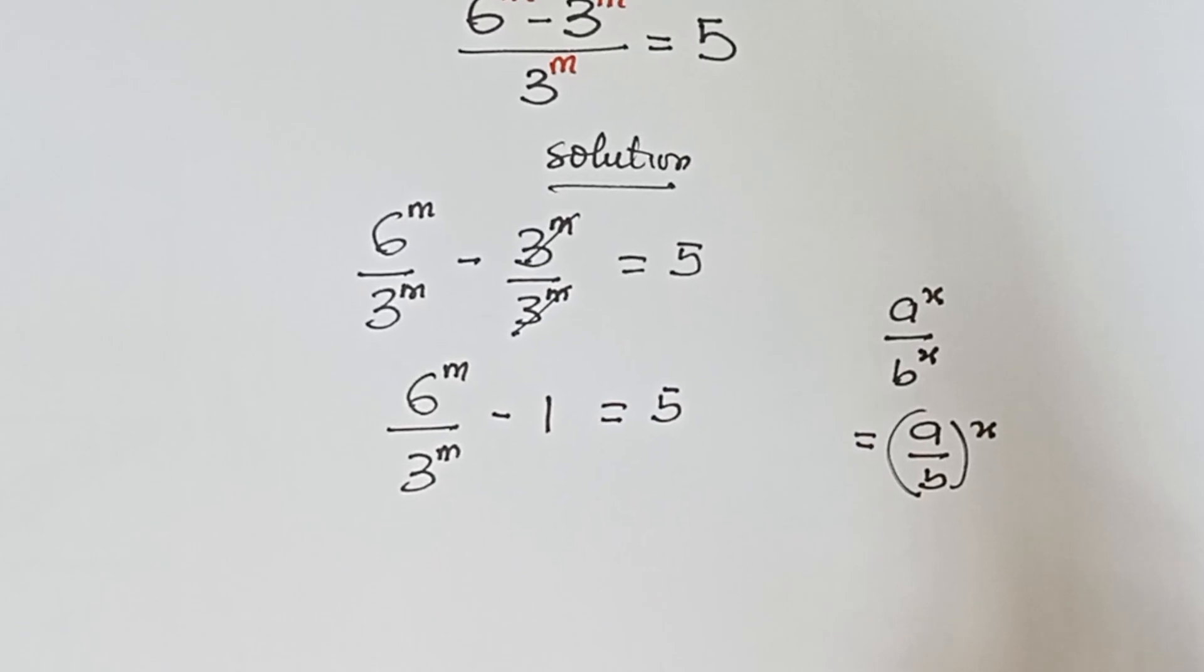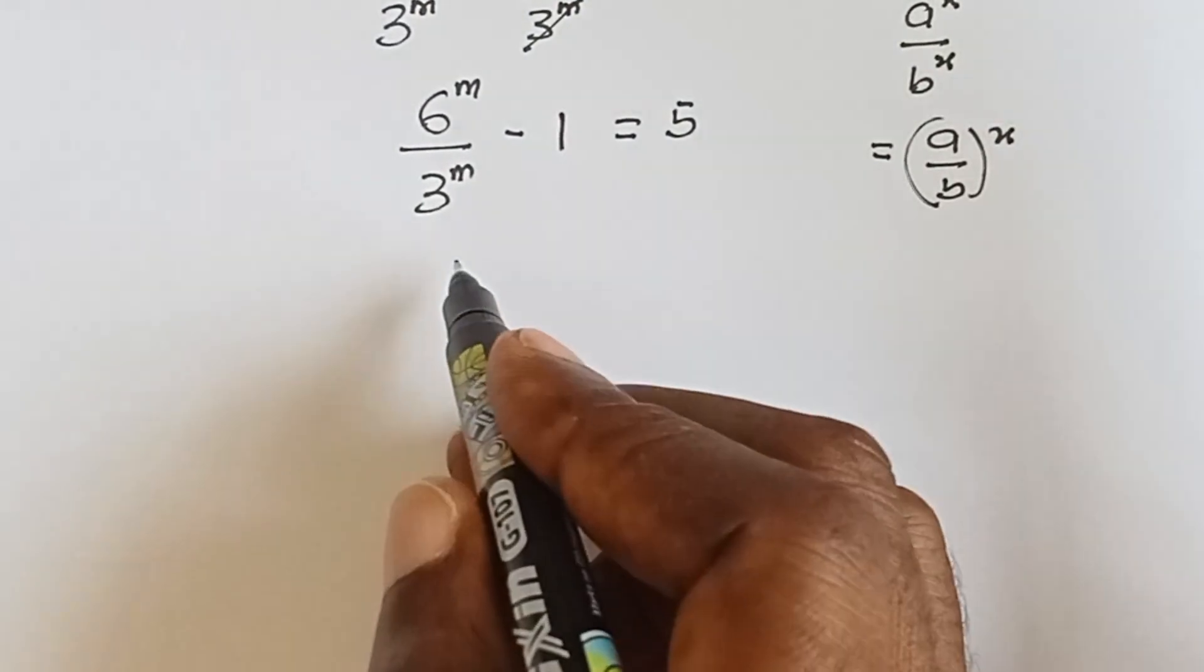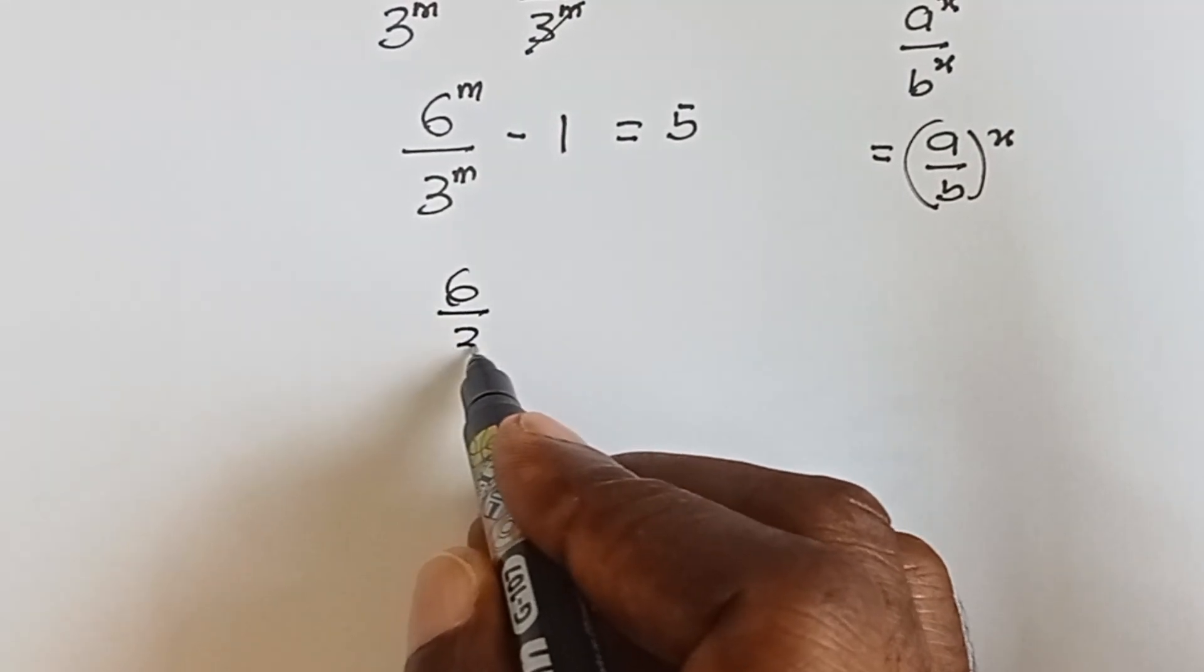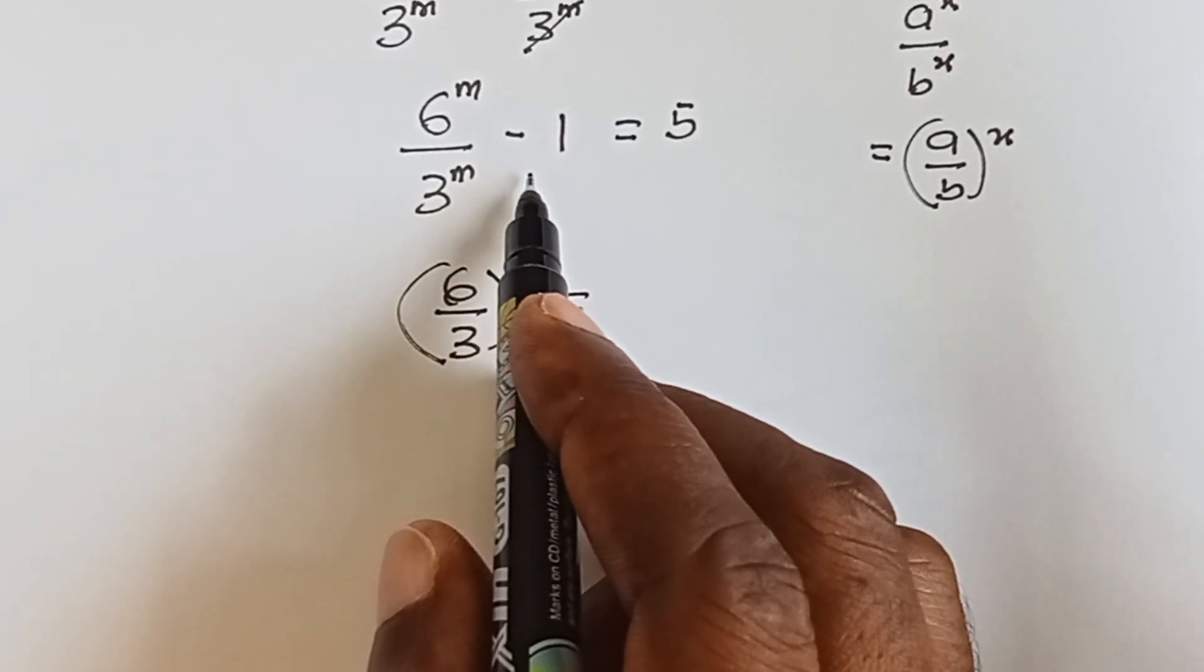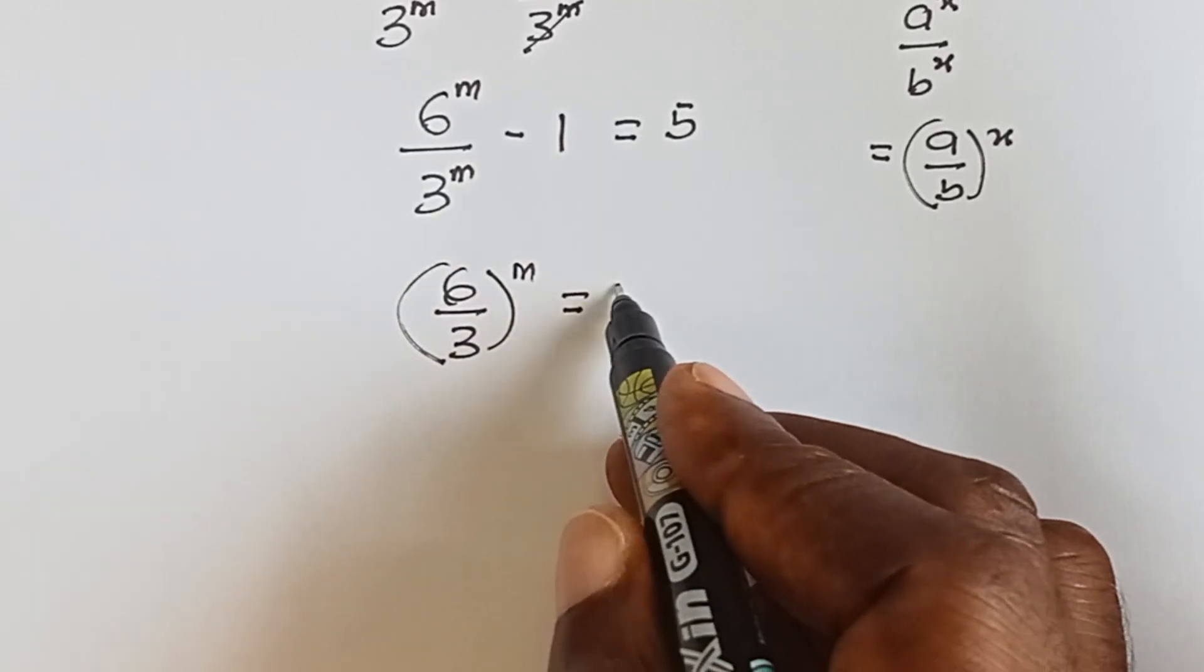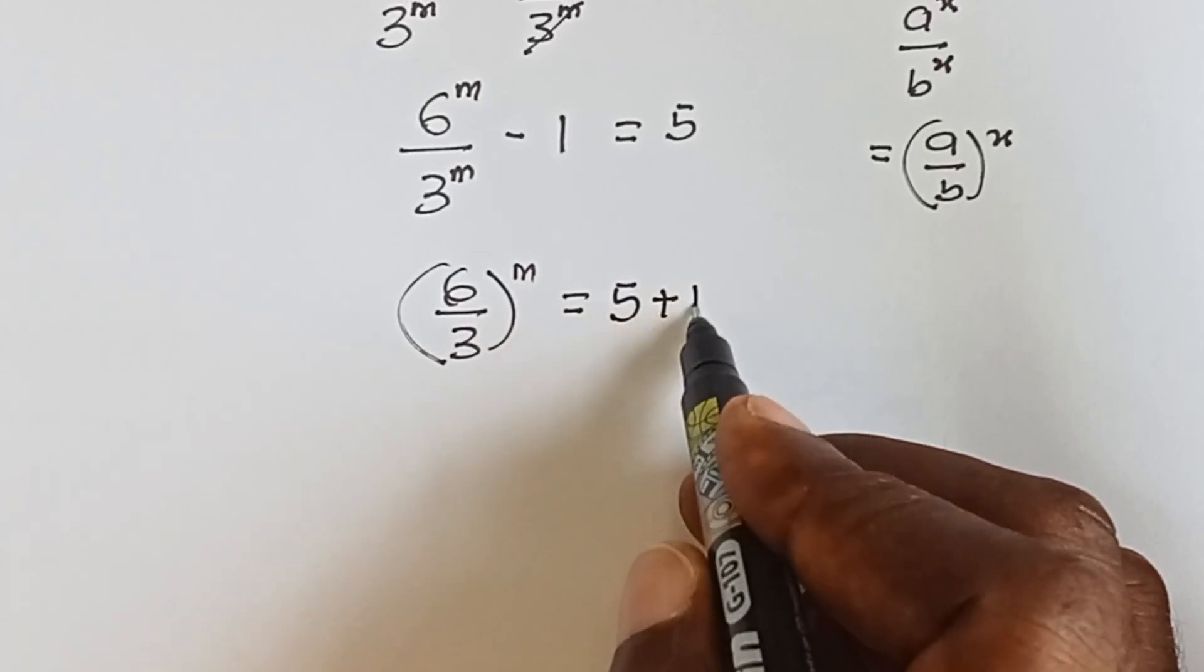So this becomes 6 over 3, everything raised to power m equals to... we take this minus 1 to the other side and it becomes 5 plus 1.